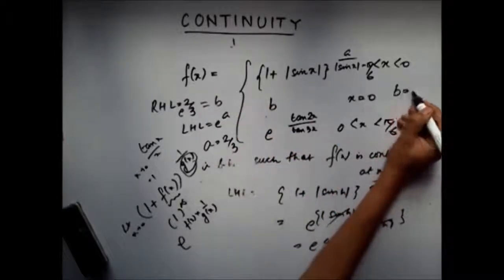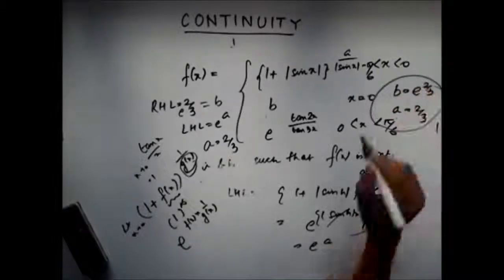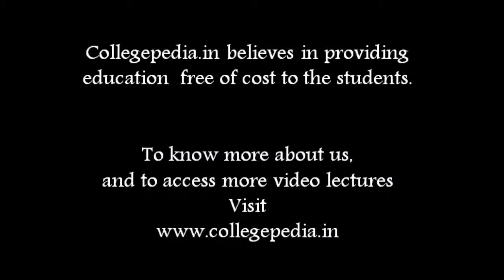So b = e^(2/3), a = 2/3. This is my answer. Thank you.